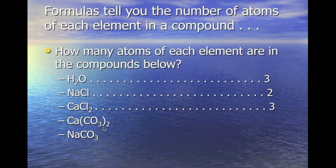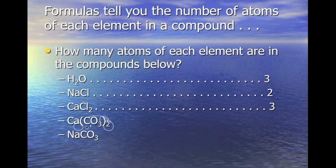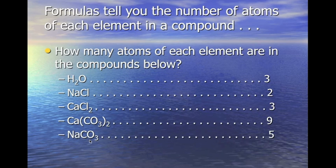Here we have a polyatomic ion, carbonate, bonding to calcium. Calcium does not have a subscript, and carbonate has a subscript of 2 on the outside of the parentheses. So we multiply everything in: the understood subscript of 1 for carbon times 2 equals 2, and the subscript of 3 for oxygen times 2 equals 6 — that's 8 atoms, plus 1 calcium gives us 9 total. For sodium carbonate below, we have 5: 1 sodium, 1 carbon, and 3 oxygen.